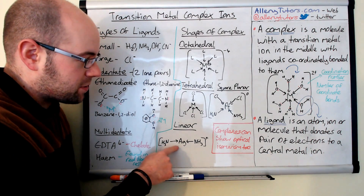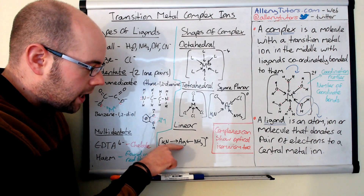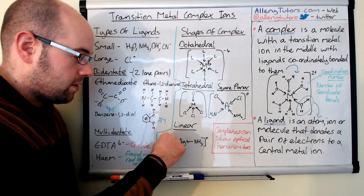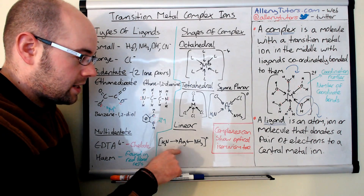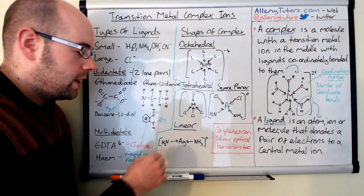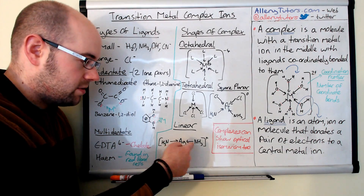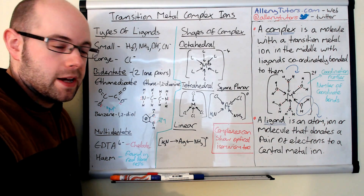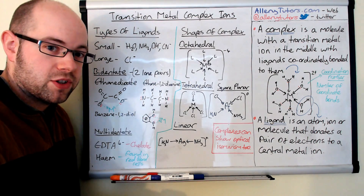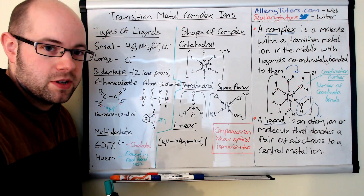The final shape is linear. Linear complexes have a bond angle of 180 degrees. An example is Tollens' reagent, which you might use for detecting aldehydes — it gives the silver mirror test. It's best to check your specification to see if you need to know this one.